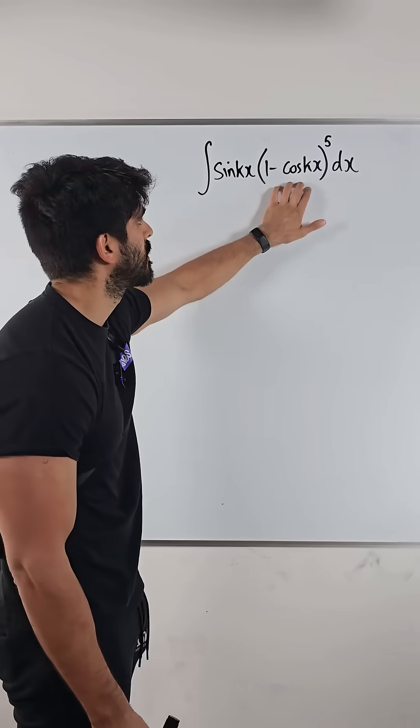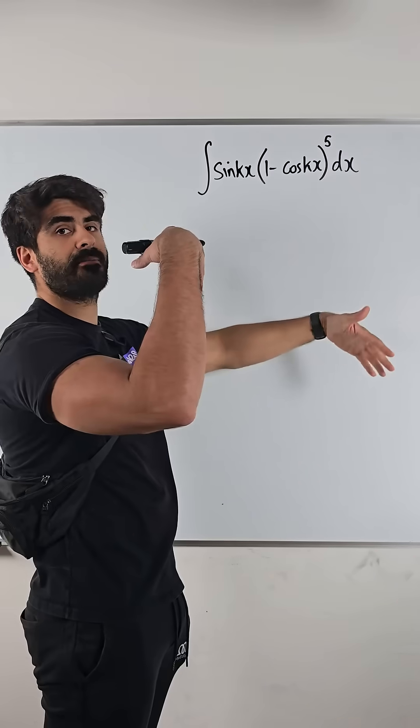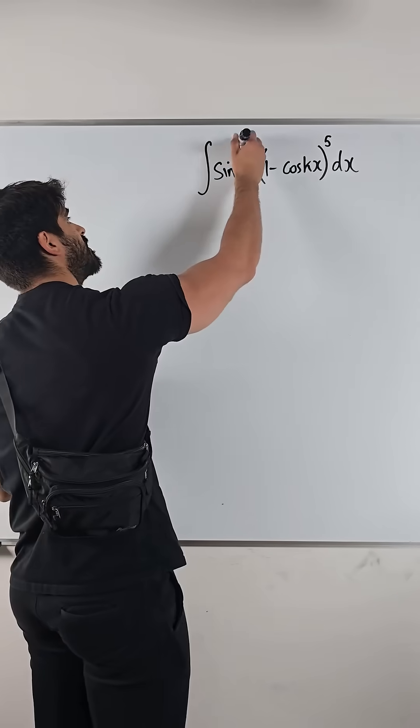Now I notice that this looks very similar to the differential of what's inside the bracket. So I'm going to do the reverse chain rule and add one to the power. We're just reversing that process. This is the differentiated bracket.